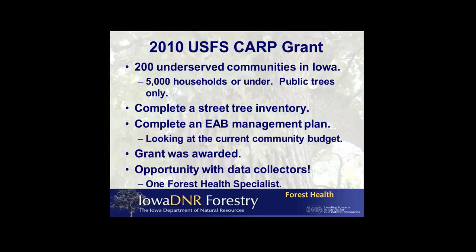That was a bit more than we probably should have taken on. We looked at 200 underserved communities — we defined underserved as communities with 5,000 households or under — and we were going to look at public trees only. As part of this grant, we would complete a street tree inventory. Some of the smaller communities went beyond just street trees to parks and cemeteries. That would allow us to provide them an emerald ash borer management plan that would look at their current budget and show them, in real time, how long it would take to remove all ash trees given their current budget, and how much they should probably be funding their ash removal program.